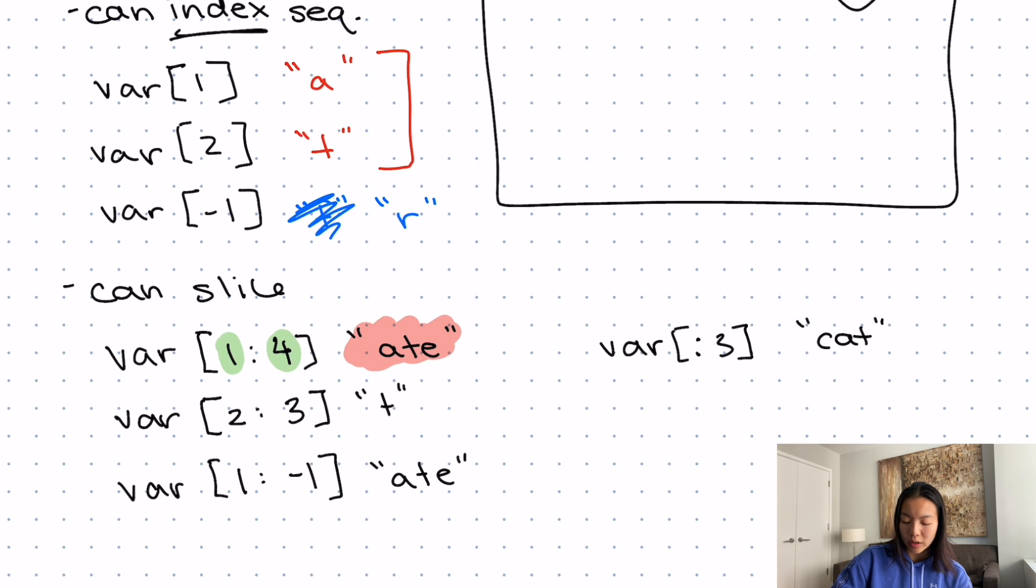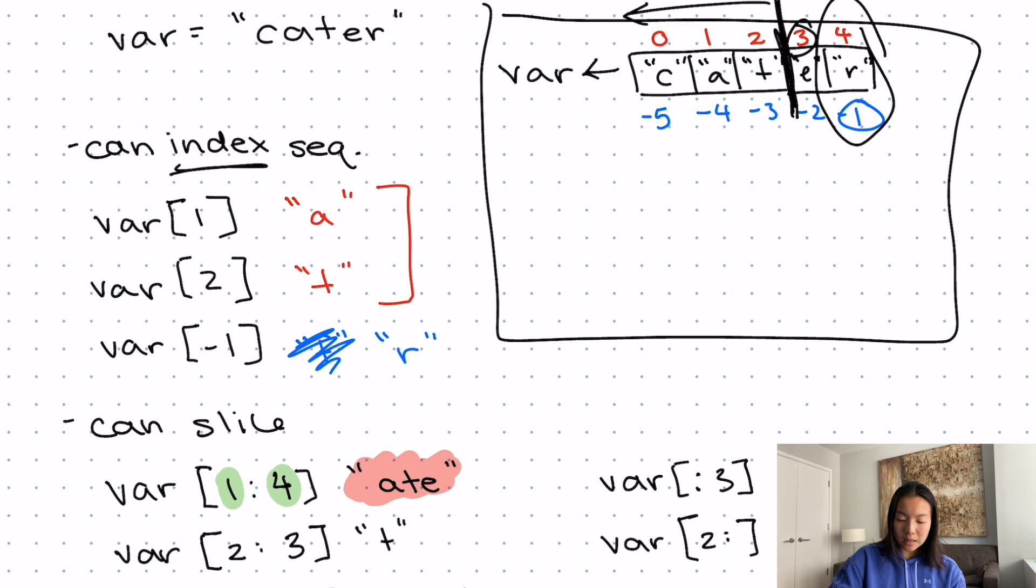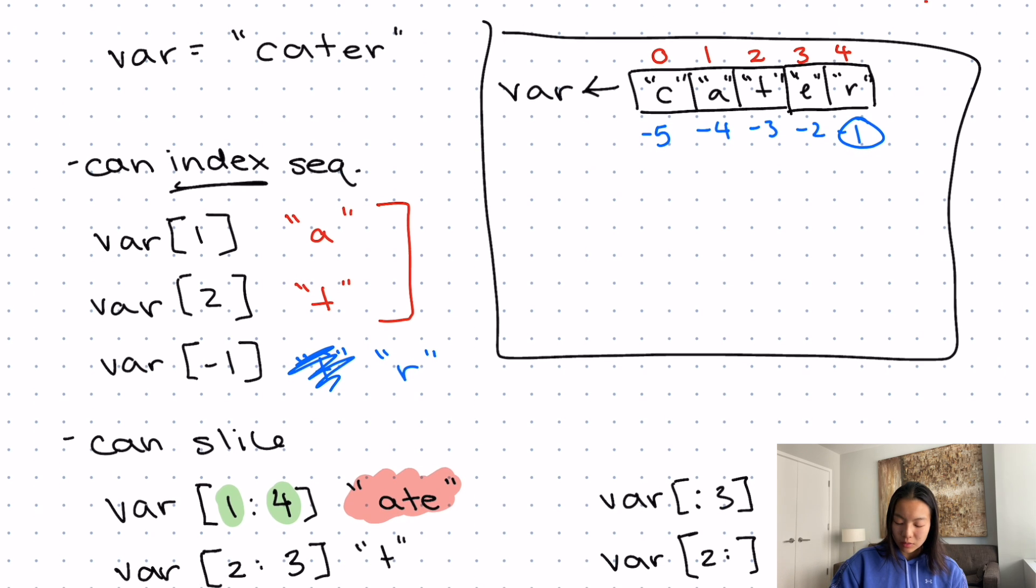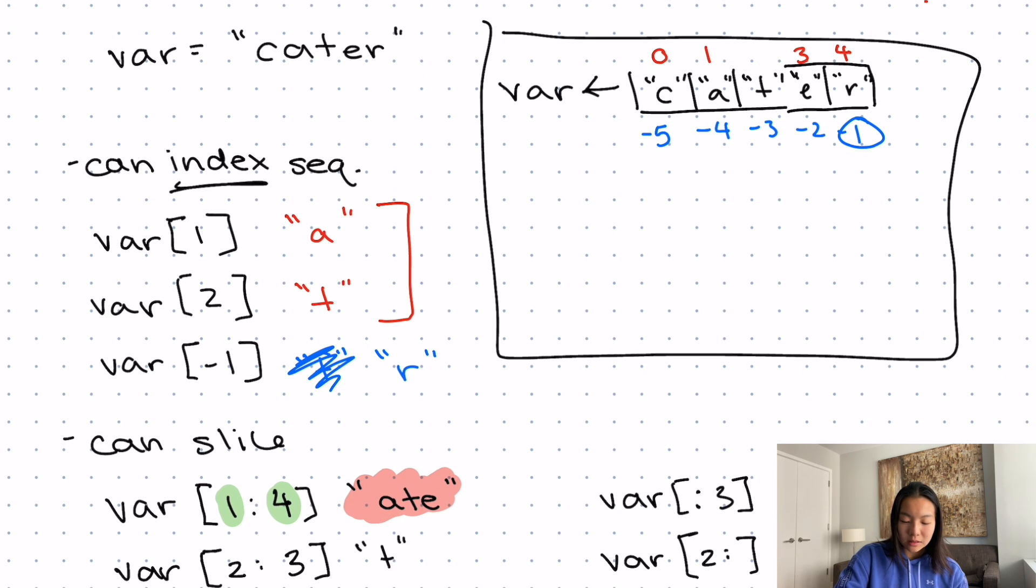Now, if I wanted to go from some index to the very end of the string, I could just leave off the ending. So this would say, let's find two. We're going to go to the left of this two. And then the semicolon without anything else means, let's go to the very end. So this would be t e r.